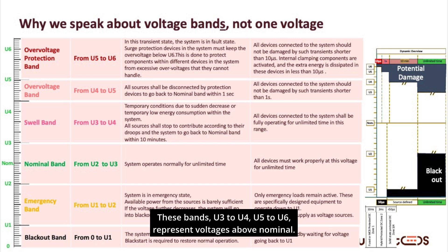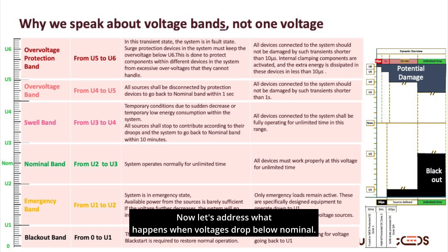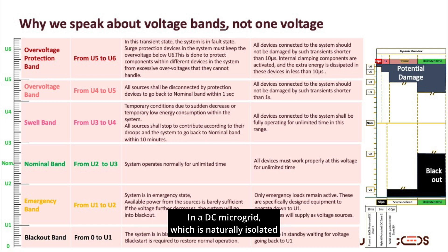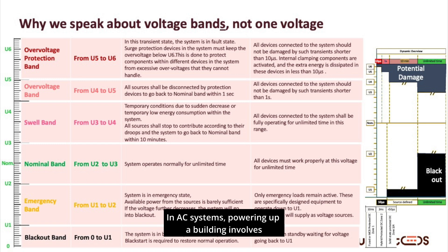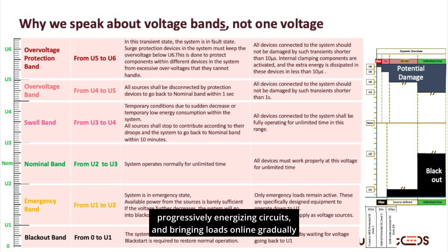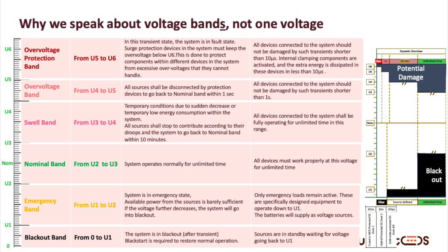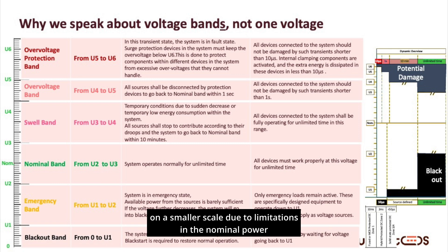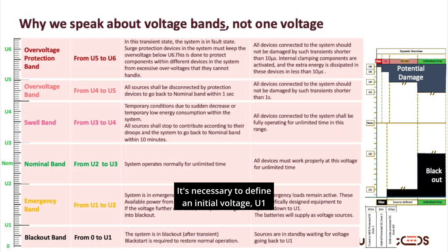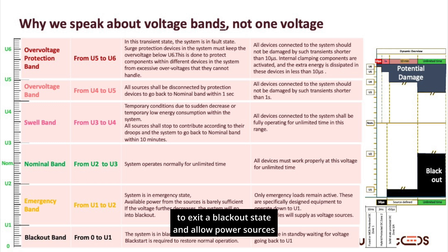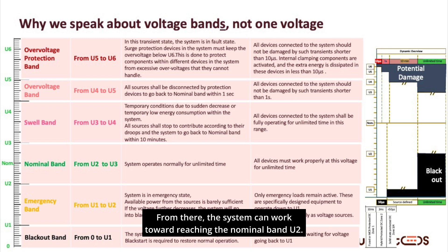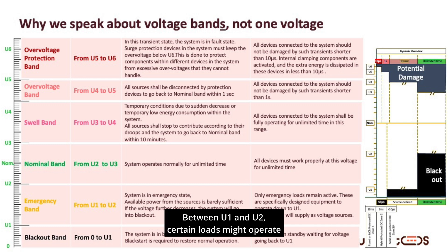These bands — U3 to U4 and U5 to U6 — represent voltages above nominal. Now let's address what happens when voltages drop below nominal. In a DC microgrid, which is naturally isolated from the public grid by an AC-DC converter, startup poses unique challenges. In AC systems, powering up a building involves carefully managed steps: magnetizing the transformer, progressively energizing circuits, and bringing loads online gradually to avoid tripping protections due to high inrush currents. DC systems require a similar approach. It's necessary to define an initial voltage, U1, to exit a blackout state and allow power sources to begin contributing. From there, the system can work toward reaching the nominal band, U1 to U2. Between U1 and U2, certain loads might operate in emergency mode — for instance, safety lighting or fire protection systems.